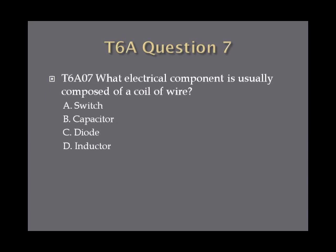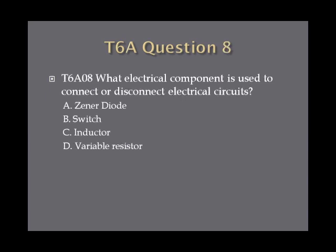Question 7: What electrical component is usually composed of a coil of wire? A, switch. B, capacitor. C, diode. Or D, inductor. Question 8: What electrical component is used to connect or disconnect electrical circuits? A, zener diode. B, switch. C, inductor. Or D, variable resistor.